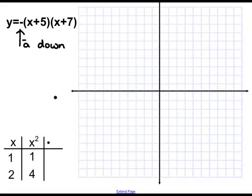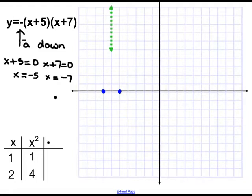And then what we would do is we would set each set of parentheses equal to 0 and solve. Now what this will give us is our two x-intercepts, negative 5 and negative 7. We would then plot these two values on our graph, negative 5 and negative 7. And then we would add them together and divide by 2 to find the axis of symmetry. In this case, the axis of symmetry is at negative 6.